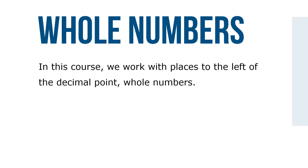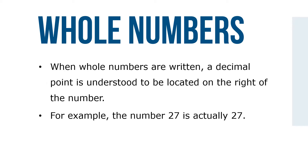In this course, we'll work with the places to the left of the decimal point, known as whole numbers. When whole numbers are written, a decimal point is understood to be located at the right of the number. For example, the number 27 is actually 27 point.